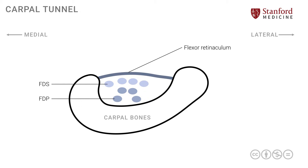There is yet another tendon — the individual tendon of the flexor pollicis longus, or FPL — which is crossing through the carpal tunnel as well, on its way from the forearm to the hand.